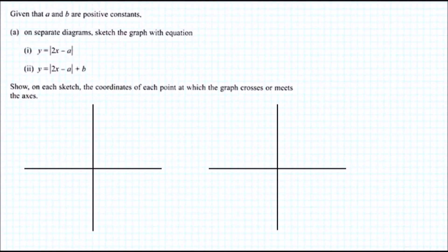Okay, given that a and b are positive constants, on separate diagrams let's try and sketch the graphs with these equations. The first thing you want to know is that we're dealing with absolute functions. This means that when you have a function of x which is absolute by the two absolute signs